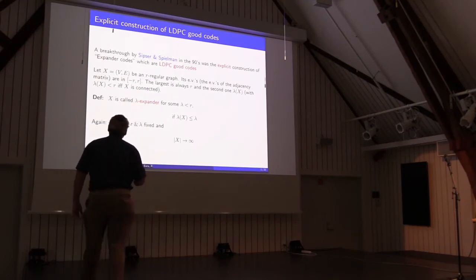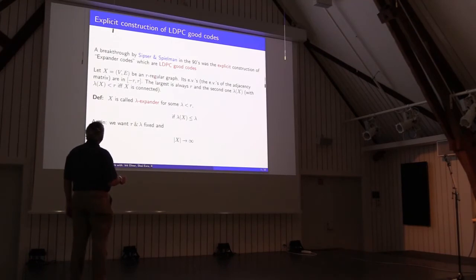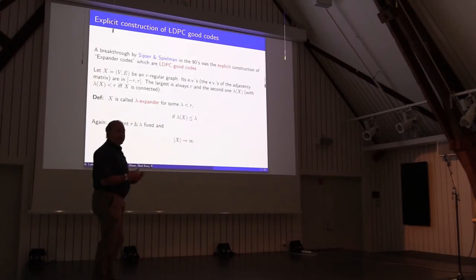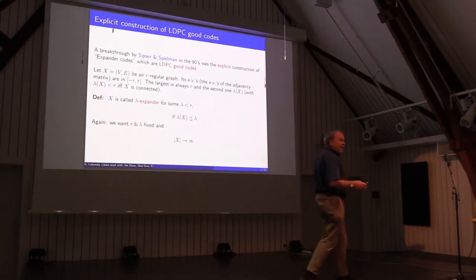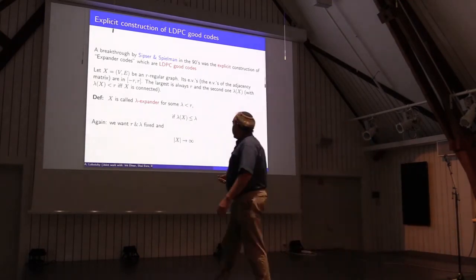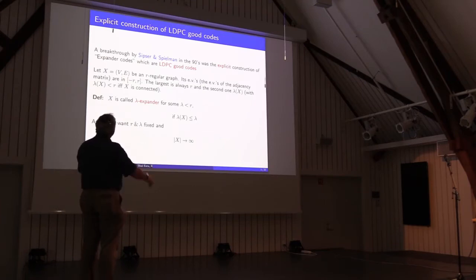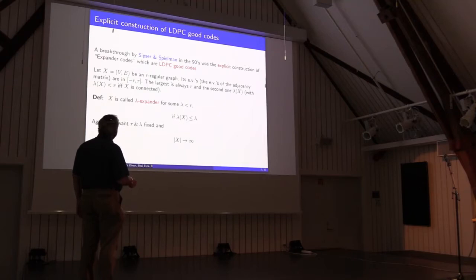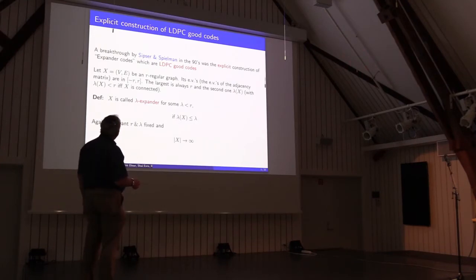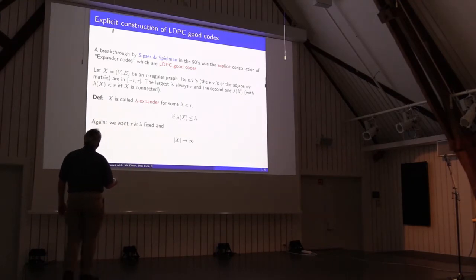Let X be a finite R-regular graph. The eigenvalues — by which we mean the eigenvalues of the adjacency matrix — all lie in the interval [−R, R]. The adjacency matrix is symmetric so all eigenvalues are real, and it's an easy exercise to see they must be between minus R and R. R is always an eigenvalue: if you take the constant vector on the vertices, that's the eigenfunction. And this R is always the largest. The most important eigenvalue is the second largest, lambda of X. Lambda of X is strictly less than R if and only if X is a connected graph.